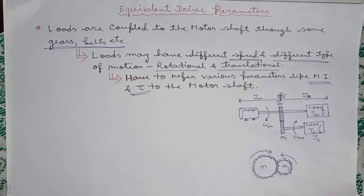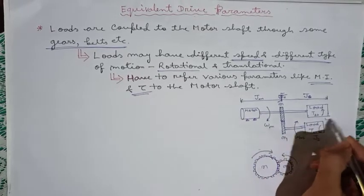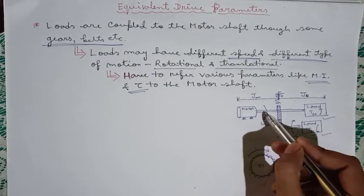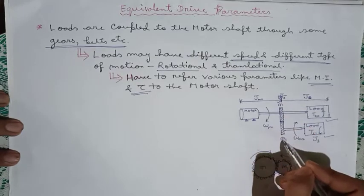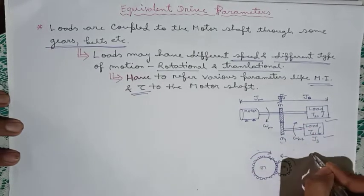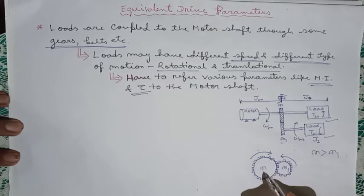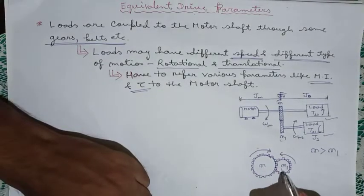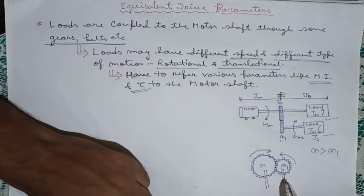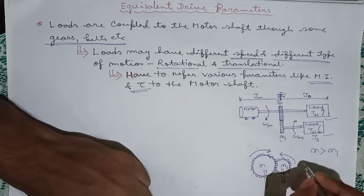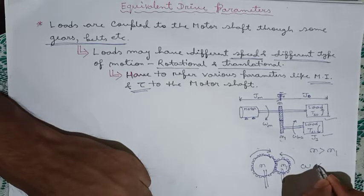Consider this motor which is driving two loads. One load is directly connected to the shaft of this motor, and the other is connected through some gear. This gear has N number of teeth and the other has N1 number of teeth. Suppose N is greater than N1. For one revolution of the larger gear, the smaller gear will undergo several revolutions in the opposite direction, so the load connected to the smaller gear will have higher speed.